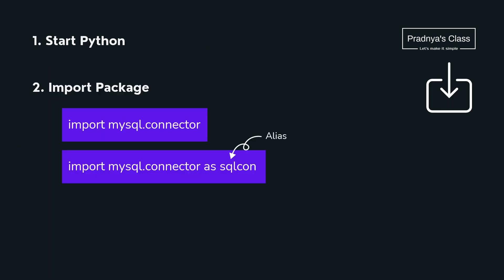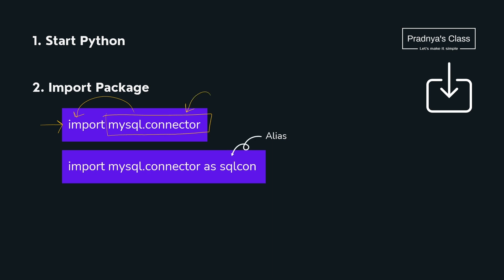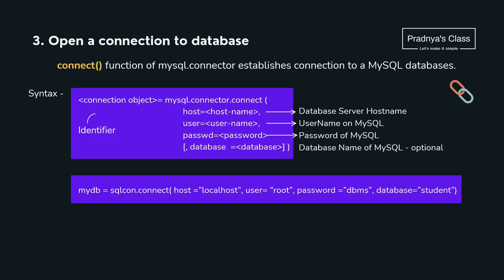All the functions related to connectivity are in the mysql.connector module, which we need to import using the import command. The name is a little lengthy, so to make it simple and small we can give an alias to it.